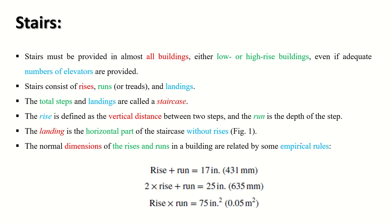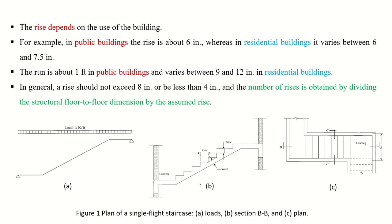Stairs consist of rises, runs, and landings. The total steps and landings are called a staircase. The rise is defined as the vertical distance between two steps, the run is the depth of the step, and the landing is the horizontal part of the staircase without rises. In figure one, you can see the landing portion, the rise (vertical distance), and the run (horizontal distance).